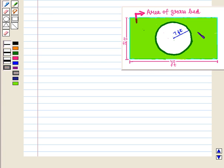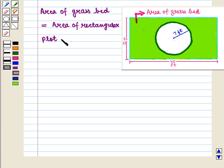Now from this figure, it is clear that if we subtract the area of the circle from the area of rectangle, we will get the remaining area, i.e., area of grass bed. So we write: area of grass bed is equal to area of rectangular plot minus area of circular pond.